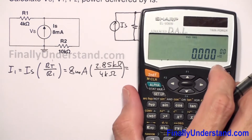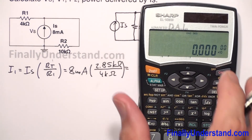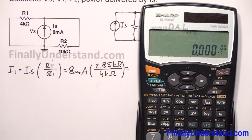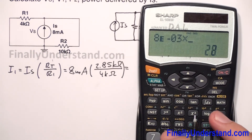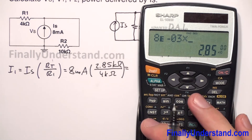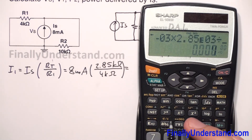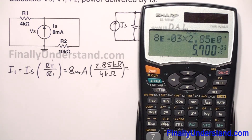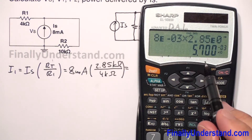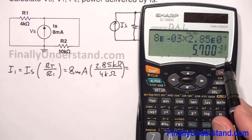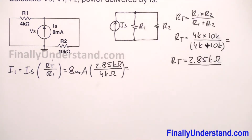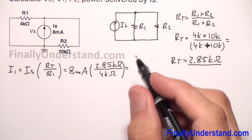Again, I am going to use the calculator. I have 8×10⁻³ times 2.85×10³ divided by 4×10³. This is equal to 5.7 mA. So this is my current I1.